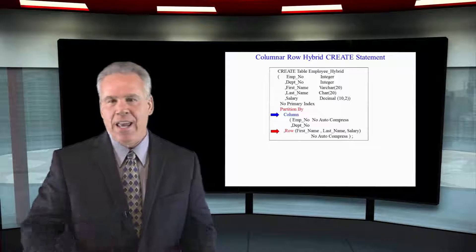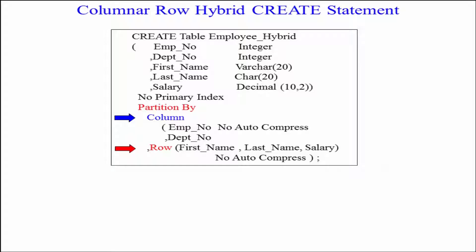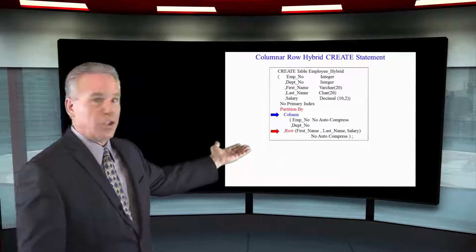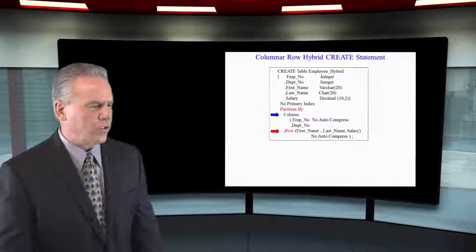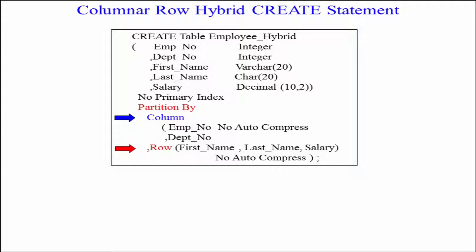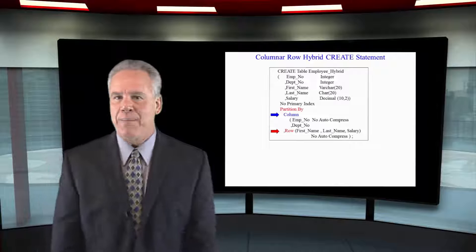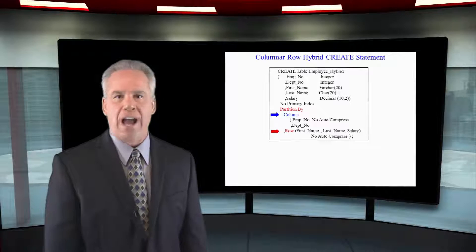Here we're going to create an actual hybrid between a columnar table and a row based table. We create the table table name, all our columns and their data types, close paren, of course no primary index. Partition by column and I want emp no. We say no auto compress there because do not compress this. It will make things a little bit faster in terms of loading. And I also want to have a column on dep no. But then I want to have a row based hybrid where I actually say row and I list the first name and the last name and the salary. This is a combination called a hybrid.